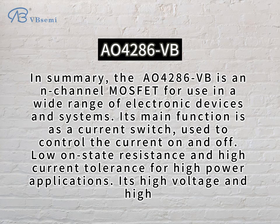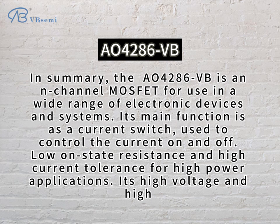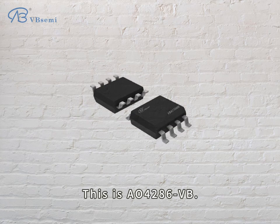In summary, the AO4286VB is an N-channel MOSFET for use in a wide range of electronic devices and systems. Its main function is as a current switch, used to control the current on and off. Low on-state resistance and high current tolerance for high power applications. It's high voltage and high speed. This is AO4286VB.